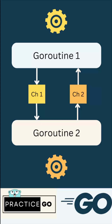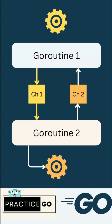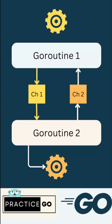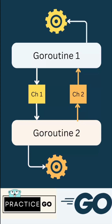When goroutine one receives an order, it informs goroutine two using channel one, which goroutine two is listening to. Goroutine two processes the order, and once complete, it informs goroutine one via channel two that the order is completed. Goroutine one then delivers the order and is ready to take another order.